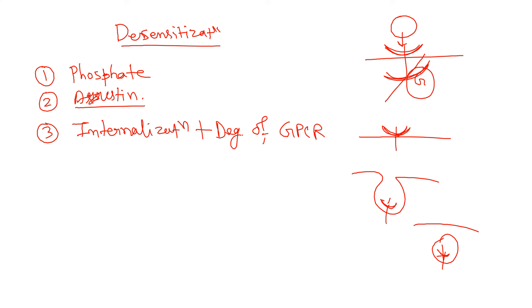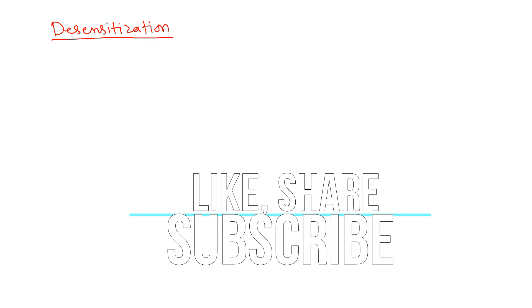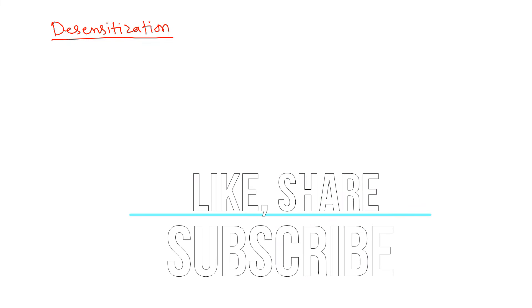These are the three steps of desensitization in the case of the GPCR pathway. That concludes our understanding of the GPCR pathway — both the cyclic AMP pathway and the IP3 pathway. In the next lecture, we are going to talk about receptor tyrosine kinase-mediated signaling. If you like this video, please hit the like button, share it with your friends, and subscribe to get more content like this.